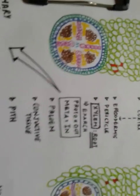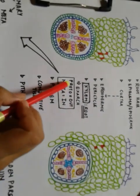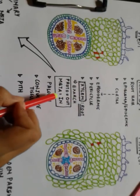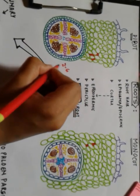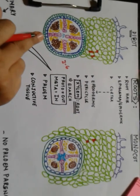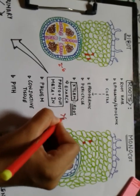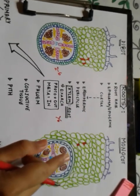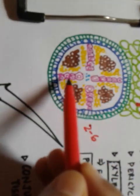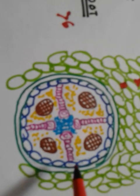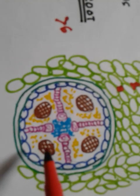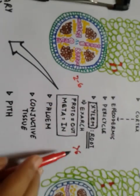One important difference: the number of xylem and phloem bundles is two to six in the case of dicot roots, and more than six — numerous — in the case of monocot roots. If you look at the diagram, I've drawn five or six bundles on the dicot side, but many more on the monocot side. The same applies for the phloem.